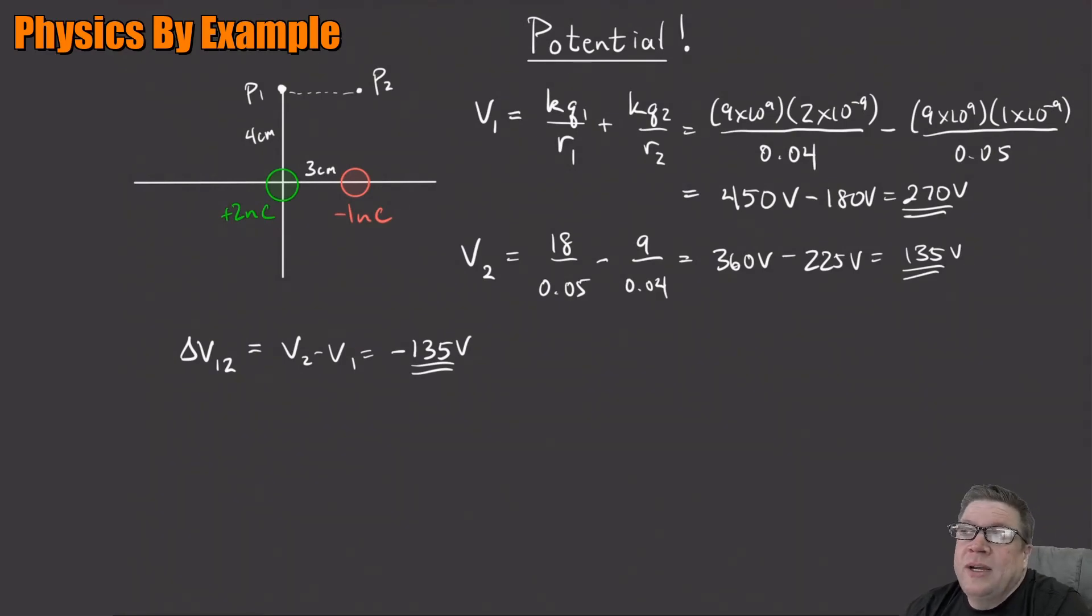So what happens is that the electric field is just equal to minus, in this case, the change of the potential divided by the change in distance. This is going to be the x component of the electric field.